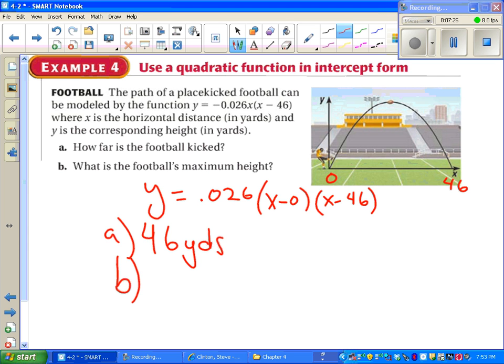Part B says, what's the football's maximum height? Well, this is a parabola, so the maximum has to occur at the vertex. And we know how to find the maximum of a parabola. We just find the X value of the vertex. And then we find the Y value of the vertex. Go ahead and use the formula for finding the vertex, or the X value of the vertex, also known as the axis of symmetry. Use that formula, see if you get the right number.